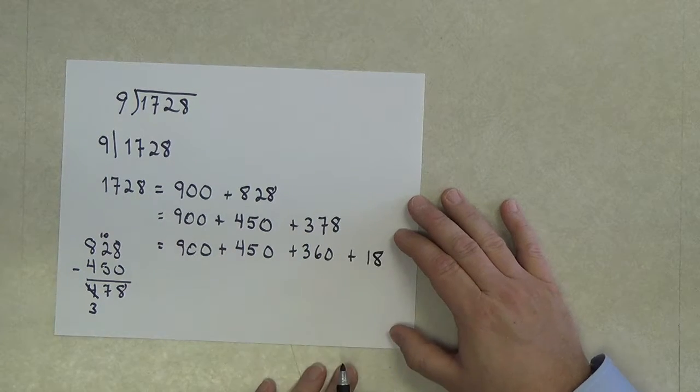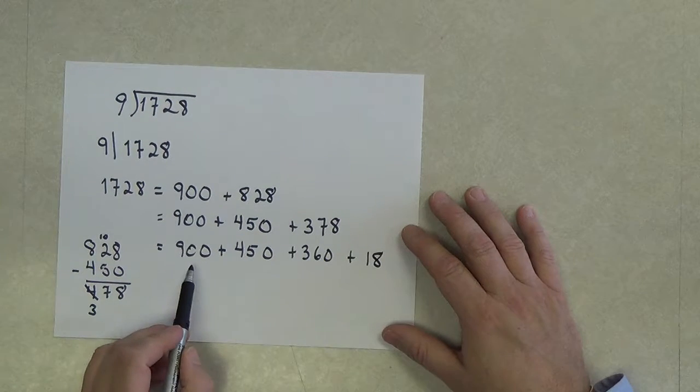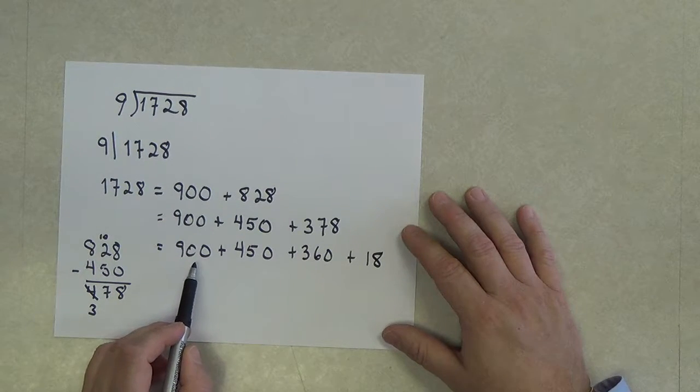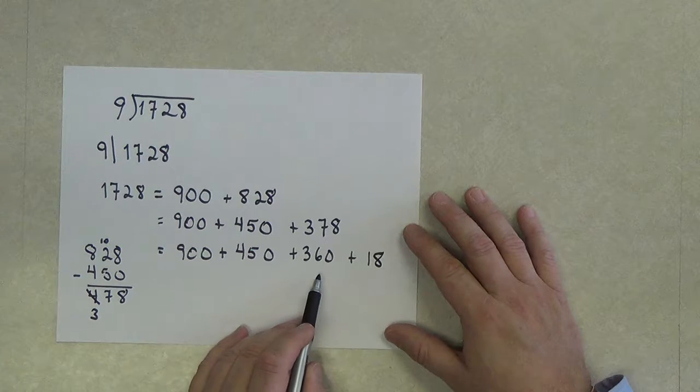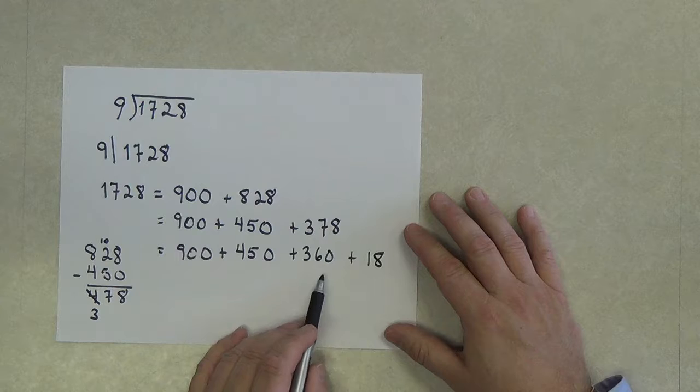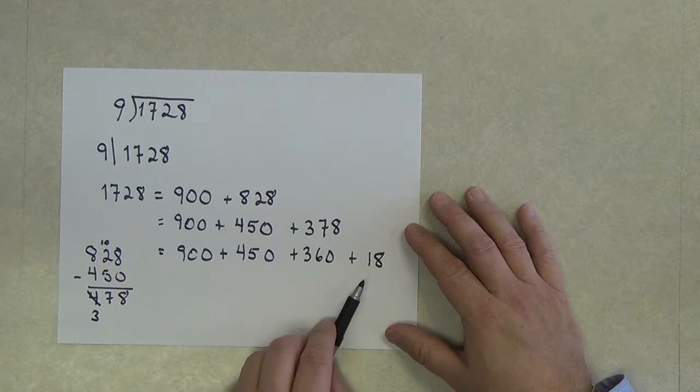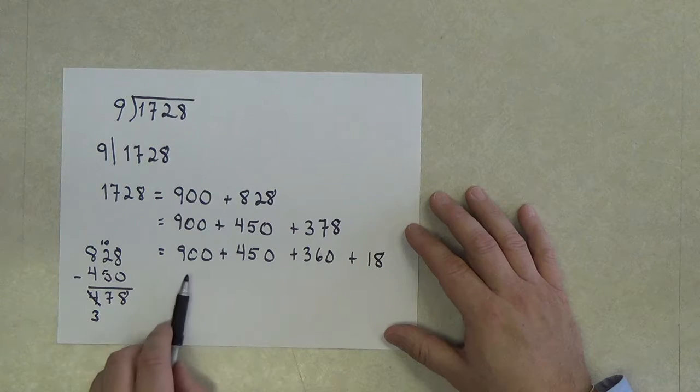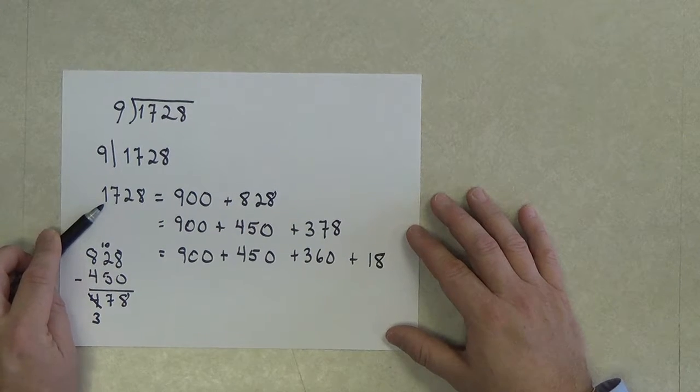So this means that since 9 divides 900, 9 divides 450, 9 divides 360, and 9 divides 18, 9 must divide the sum of all of these pieces, namely 1728.